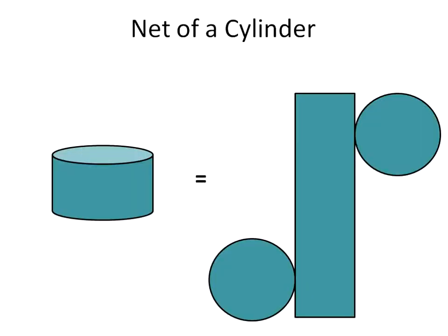Same exact thing with the cylinder. The base is the circle. So we have that there and there. And then you would just take this and roll it out and it would be another rectangle.